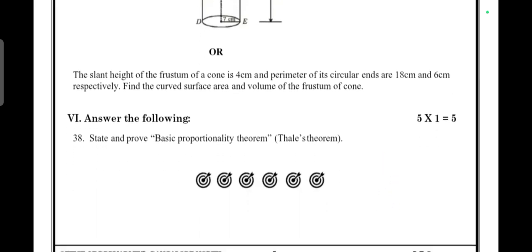OR the slant height of the frustum of a cone is 4 cm, and the perimeters of its circular ends are 18 cm and 6 cm respectively. Find the curved surface area and volume of the frustum of the cone. Last main: five marks question.